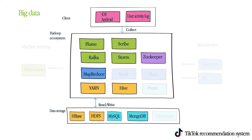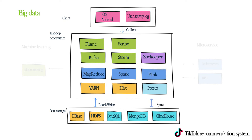As data volumes grow fast, new frameworks have come into the picture. Apache Spark enhances the performance of MapReduce by doing the processing in memory. The newer framework Flink has been deployed to do real-time streaming processing in the last couple of years.